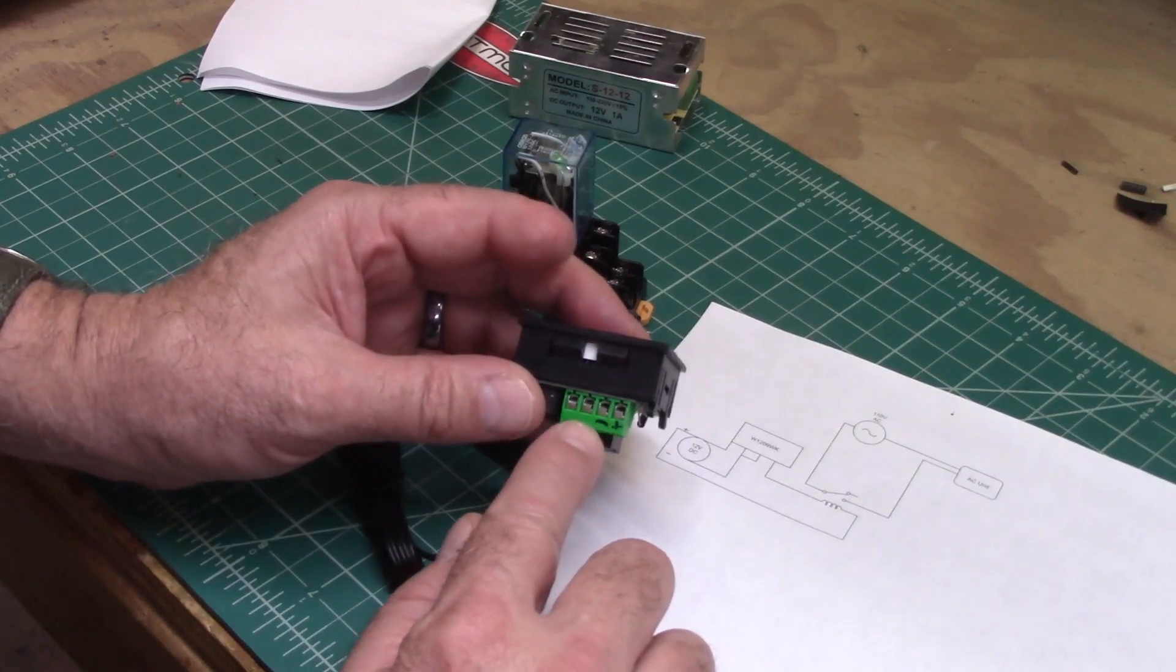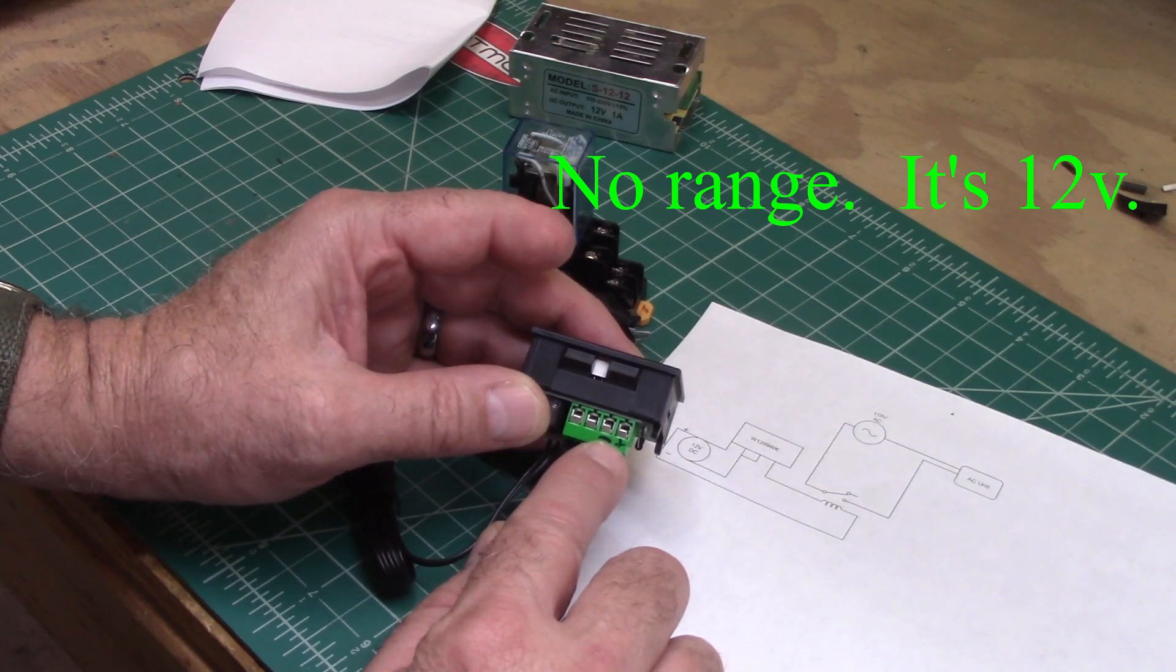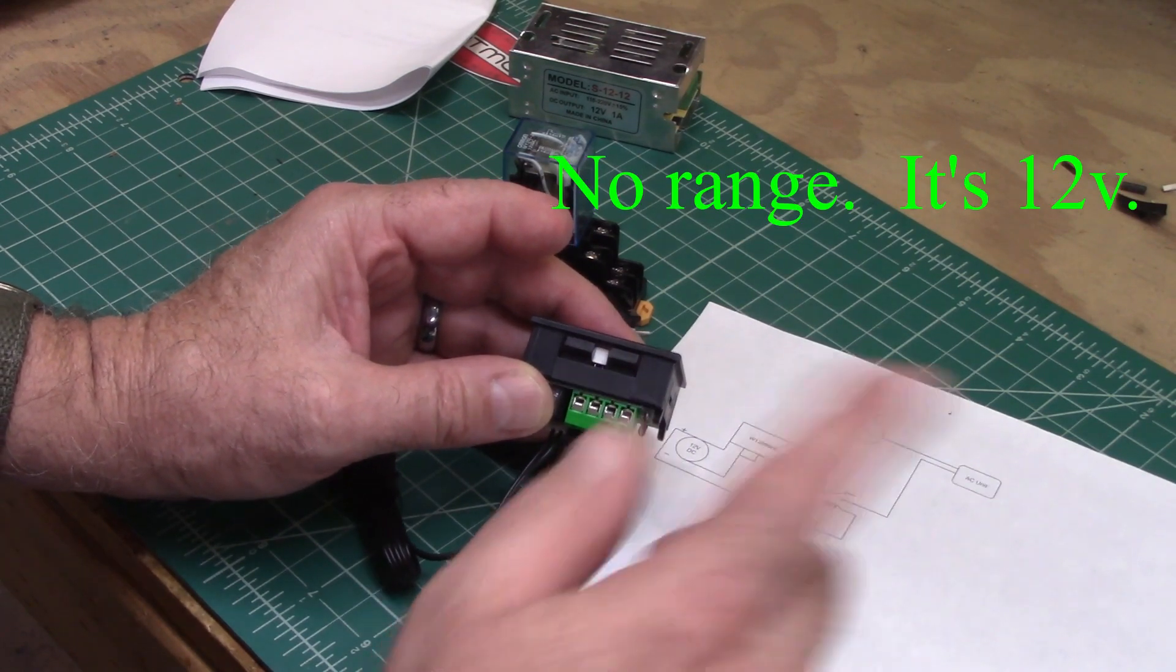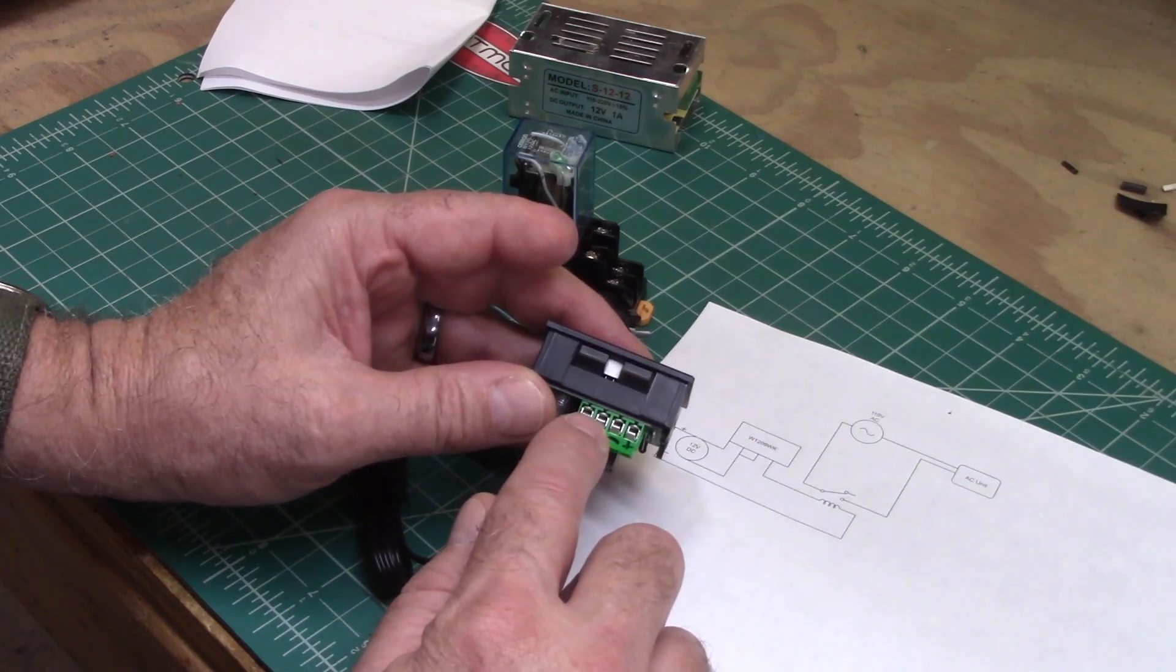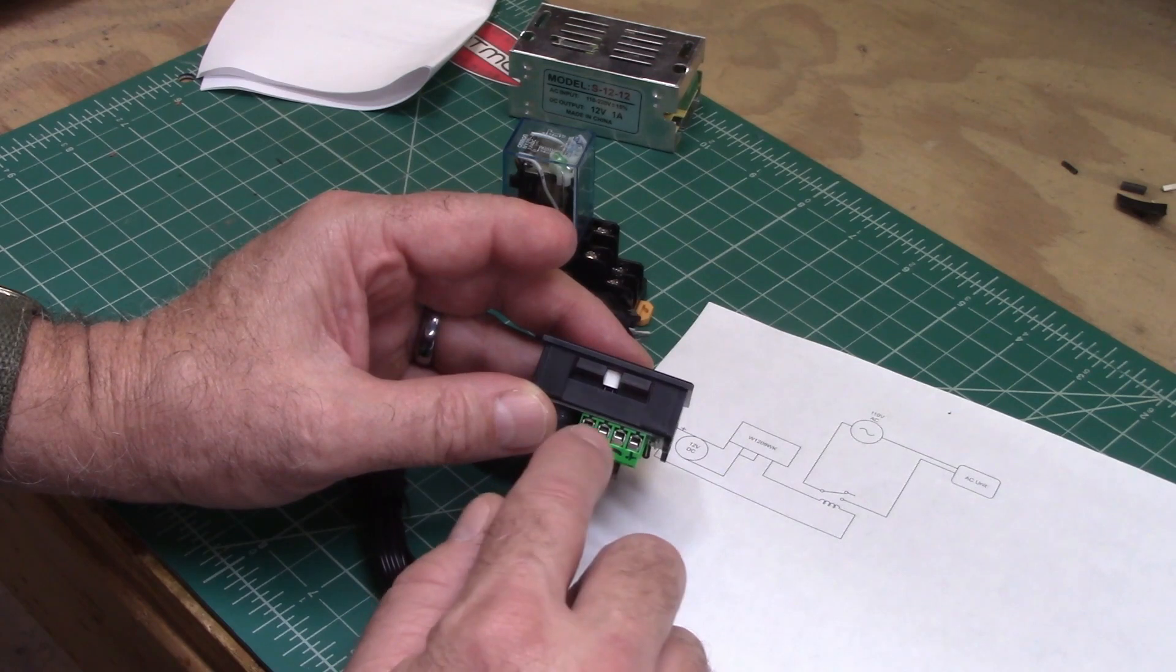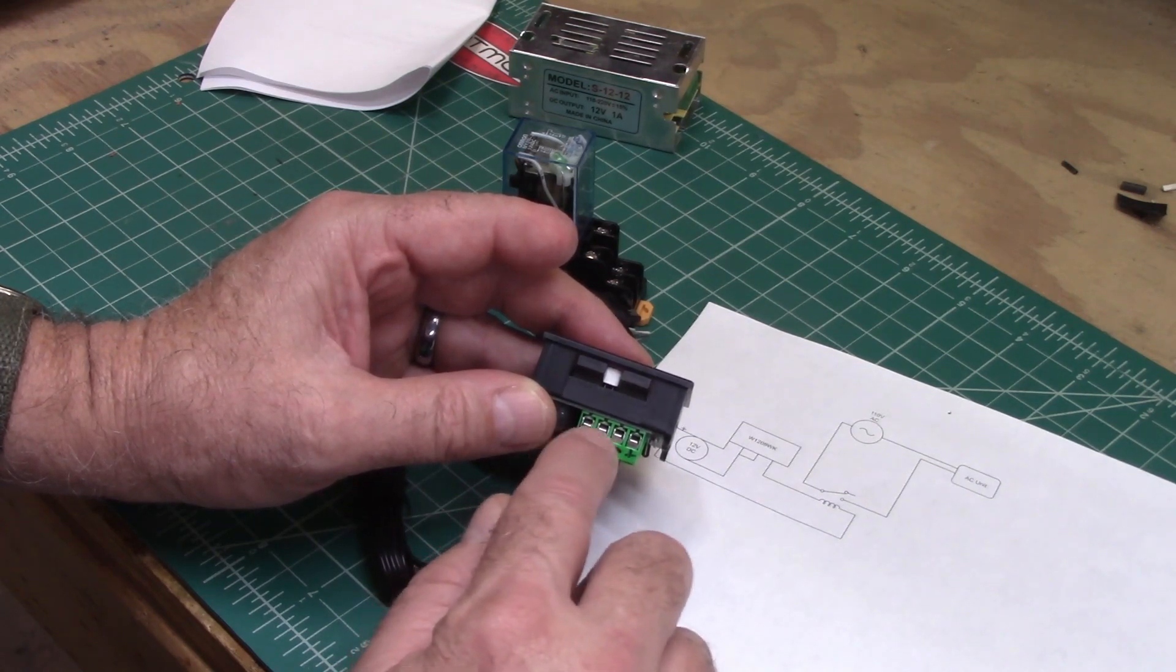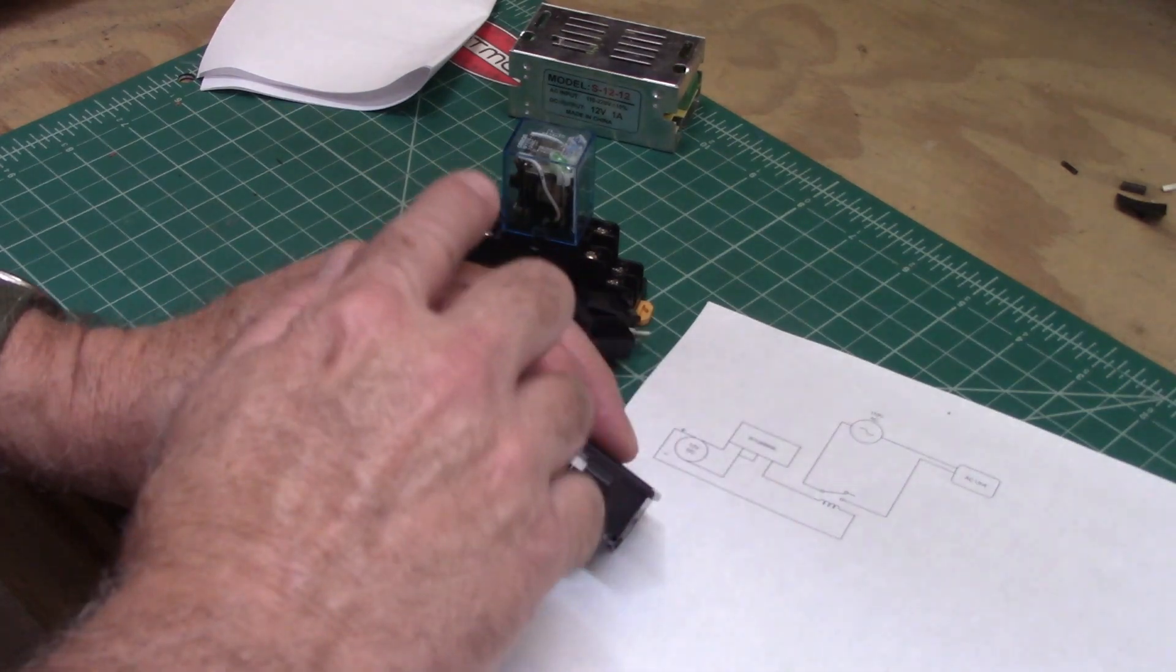These little thermostats are actually very easy to wire. They've got a positive and negative DC input. I'm using 12 volts, but I'll post what the range is. Over here, this is just your contacts. It's a normally open relay, so you just put what you're going to contact through there, and of course I use this to operate another relay.